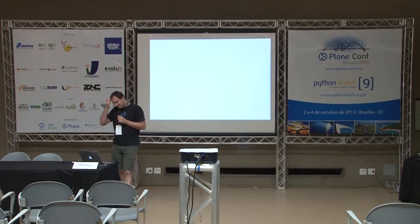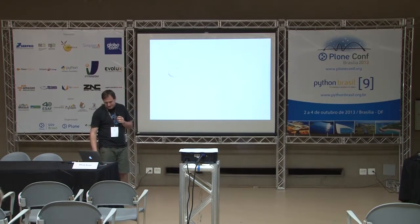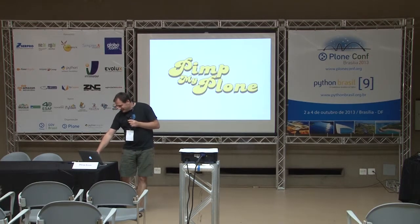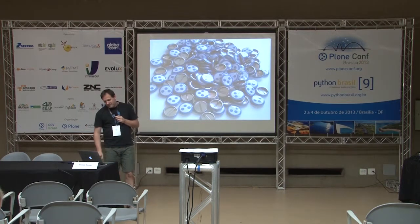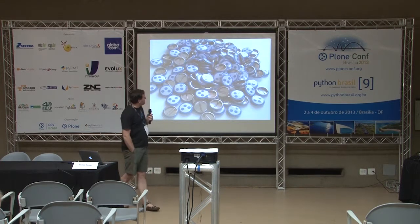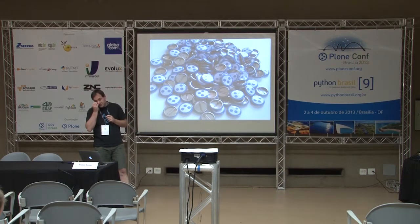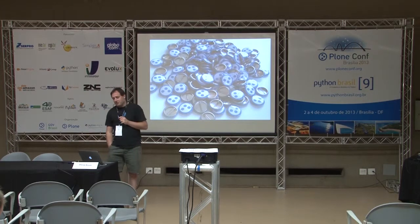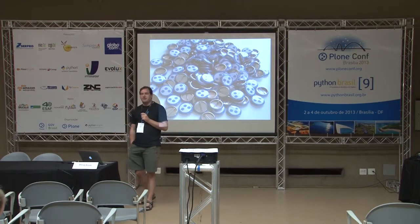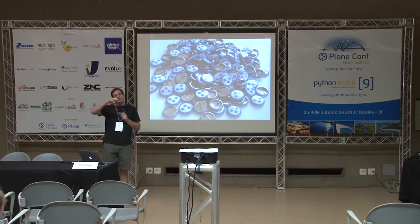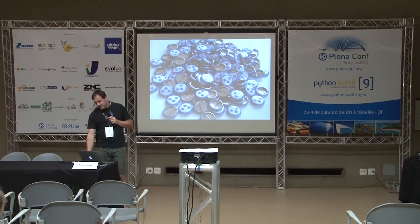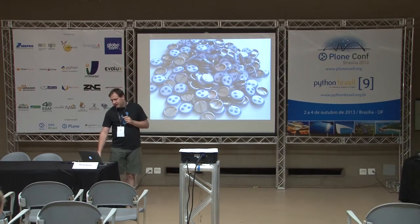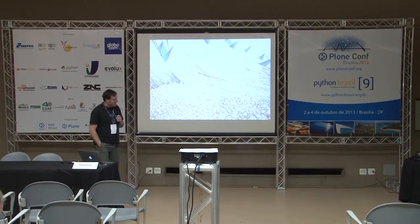If you want to extend your Plone site with shiny add-ons, there are several to choose from. There are over 1,000 repositories in the Plone collective on GitHub. The products section on plone.org holds 2,170 objects — not all unique, some are different revisions of the same software. Searching for Plone on PyPI actually yields 2,800 packages, and as you can imagine, the quality of all these add-ons varies greatly.